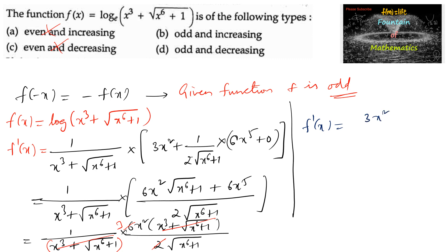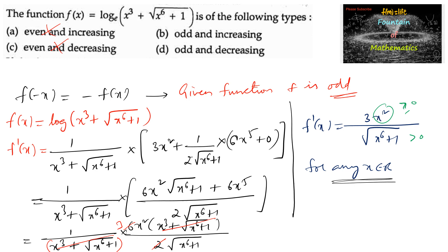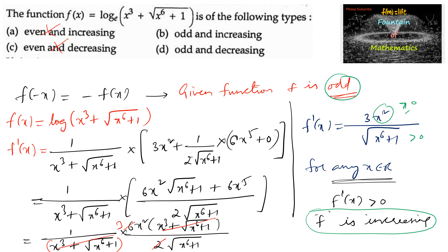We can clearly see that for any x ∈ ℝ, the numerator 3x² ≥ 0 and the denominator √(x⁶ + 1) is always greater than 0. Therefore f'(x) ≥ 0 for all x ∈ ℝ, which means f is an increasing function. So the given function is odd and increasing — we go with option B.